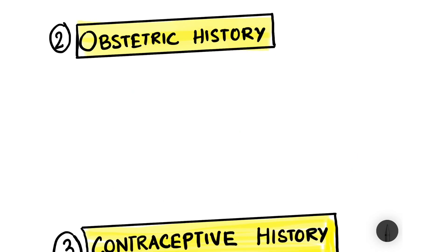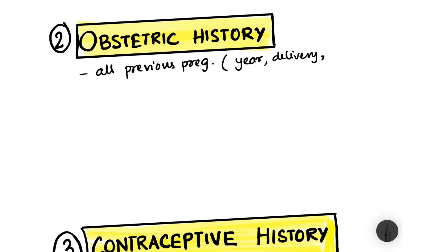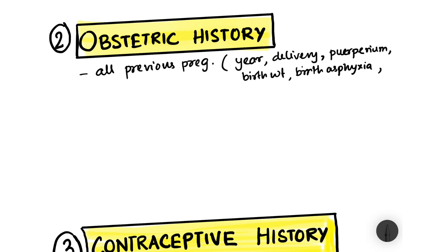Now, obstetric history is all about childbirth. You talk about all previous pregnancies in terms of the year they happened, the type of delivery — whether vaginal or cesarean section — the status of the puerperium, the birth weight of the child, whether there was birth asphyxia, and breastfeeding duration.